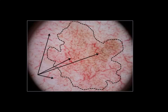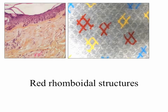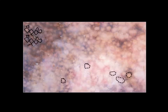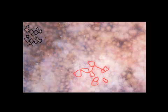Red rhomboidal structures: we are very used, after the work of Schiffner and co-workers, to recognize black rhomboidal structures, but red rhomboidal structures are also present and are due to blood vessels. If you look carefully, you have red lozenge-shaped structures — these red rhomboidal structures. You can see in this image both annular granular structures and also red rhomboidal structures.